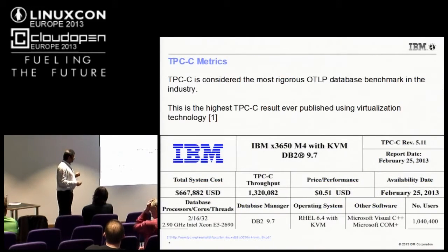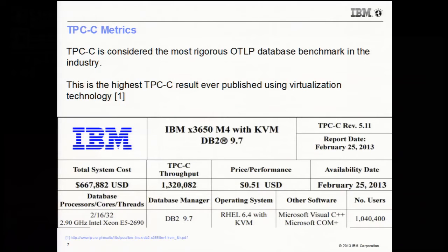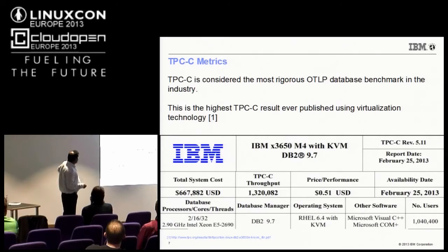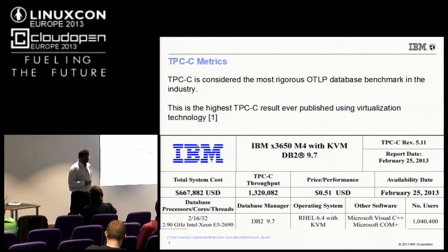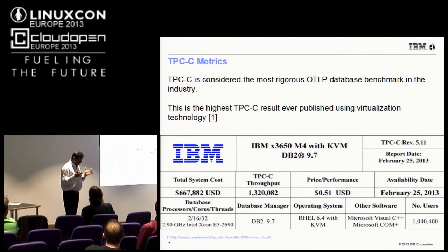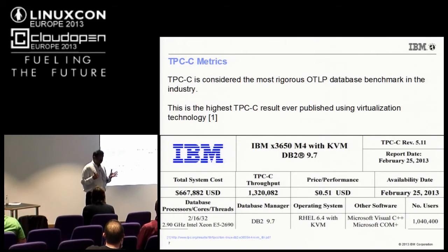This shows that even for Windows applications, KVM has excellent performance. In February of this year, IBM published a TPC result using RHEL 6.4 and DB2 on a powerful machine — and what we saw was the highest TPC results ever published for a virtualization technology. These real-world examples show that KVM is really fantastic, and that is an important argument in addition to the security argument for customers using KVM in cloud environments.